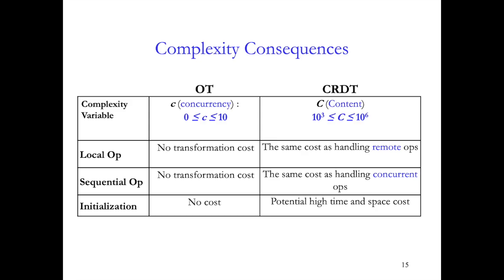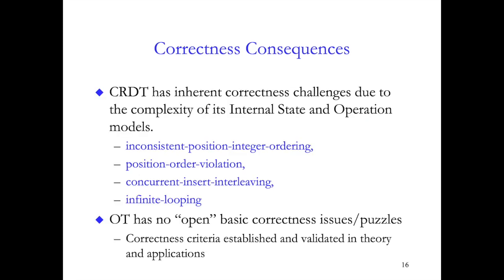While the two techniques address the same basic issues, the different executions have stark implications in terms of complexity. For transformations, the time and space complexity for OT is linear and is determined by the level of concurrency, which has a small upper bound. However, for CRDT, the complexity grows directly with the size of the document content, which typically can be multiple orders of magnitude higher. OT has no processing costs for local operations, but in CRDT, even local operations will slow down over time. Also, due to the complexity of its internal state and operation models, CRDT has inherent correctness challenges, and we present four such CRDT puzzles in the paper.